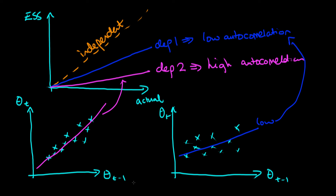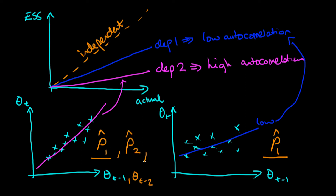We can estimate the first-order sample autocorrelation rho_1 by doing a regression of theta_t on theta_{t-1}, for both low and high autocorrelation cases. In practice, there is a more nuanced way to calculate a good value of rho. We could similarly look at theta_t versus theta_{t-2} to get the second-order sample autocorrelation, and do this for any order tau, writing it as rho-hat_tau.